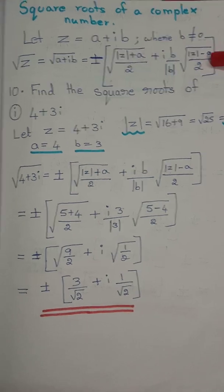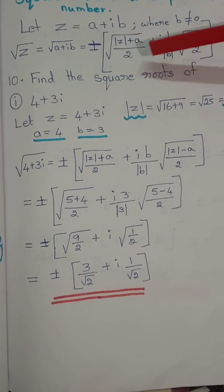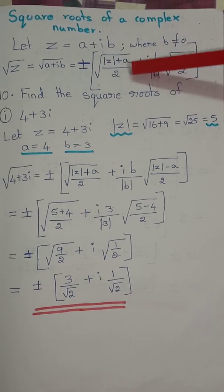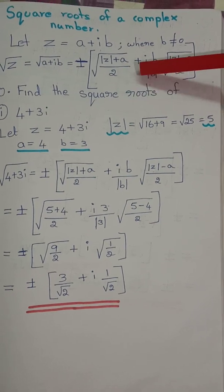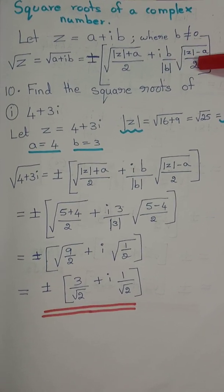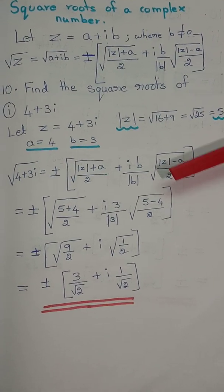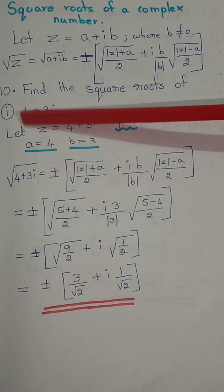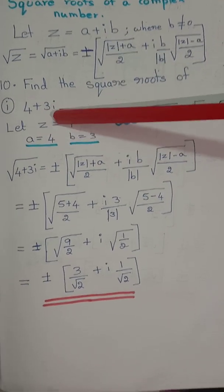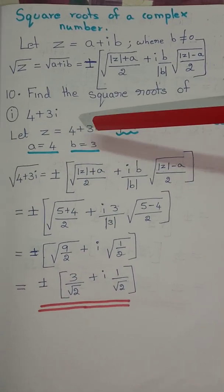This is plus or minus — that's how you use this formula. Let z equal to 4 plus 3i. We will apply the formula.